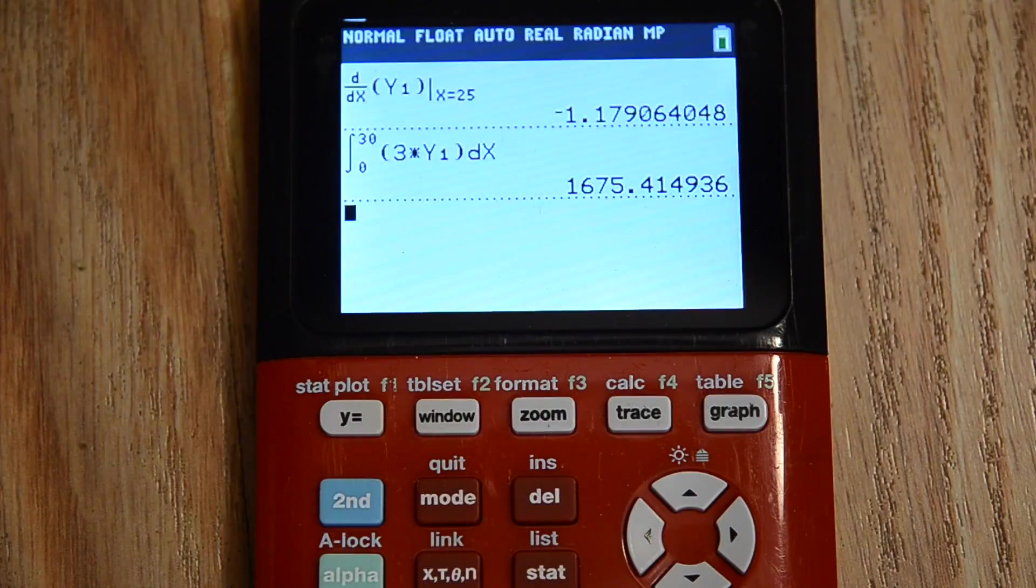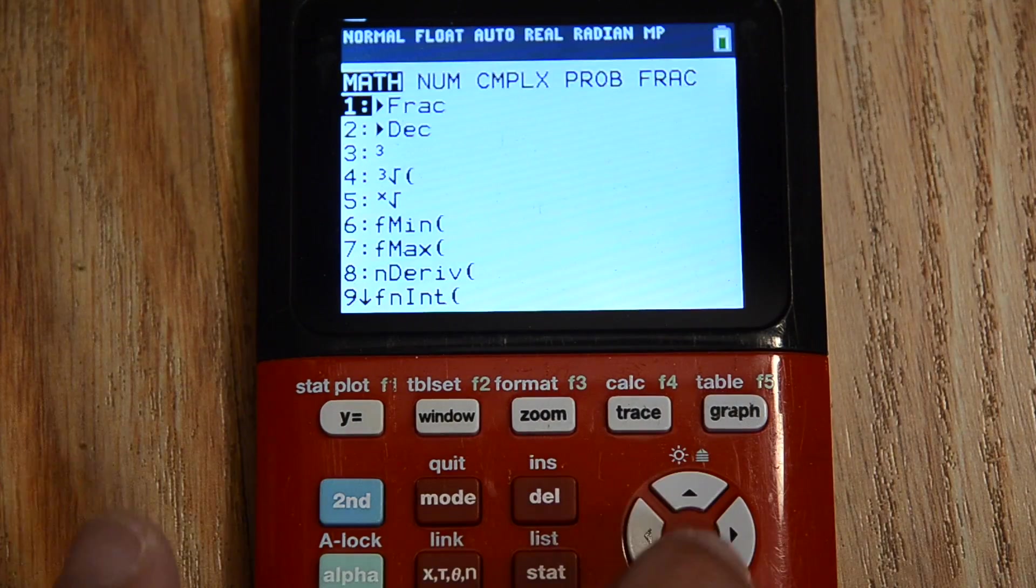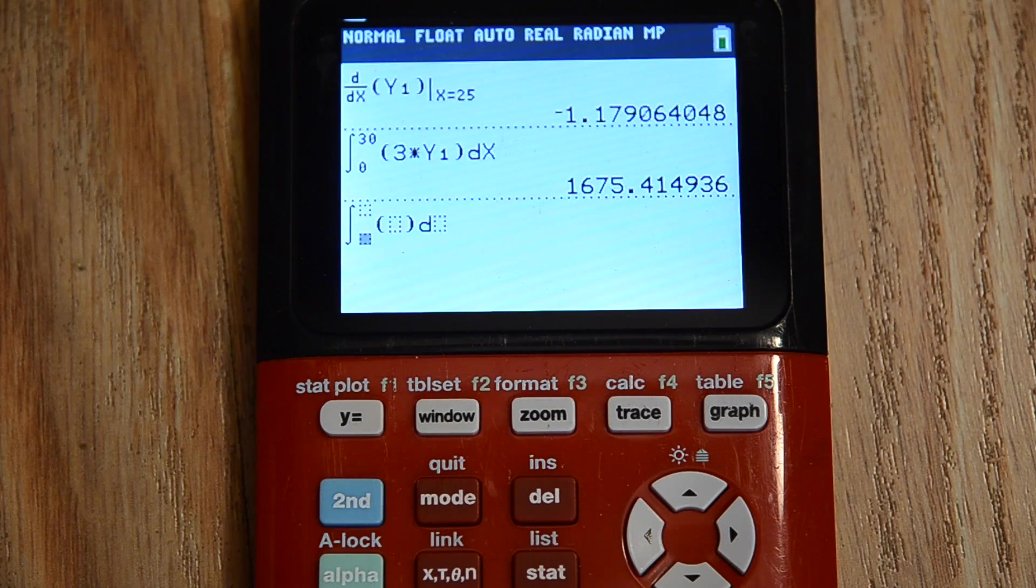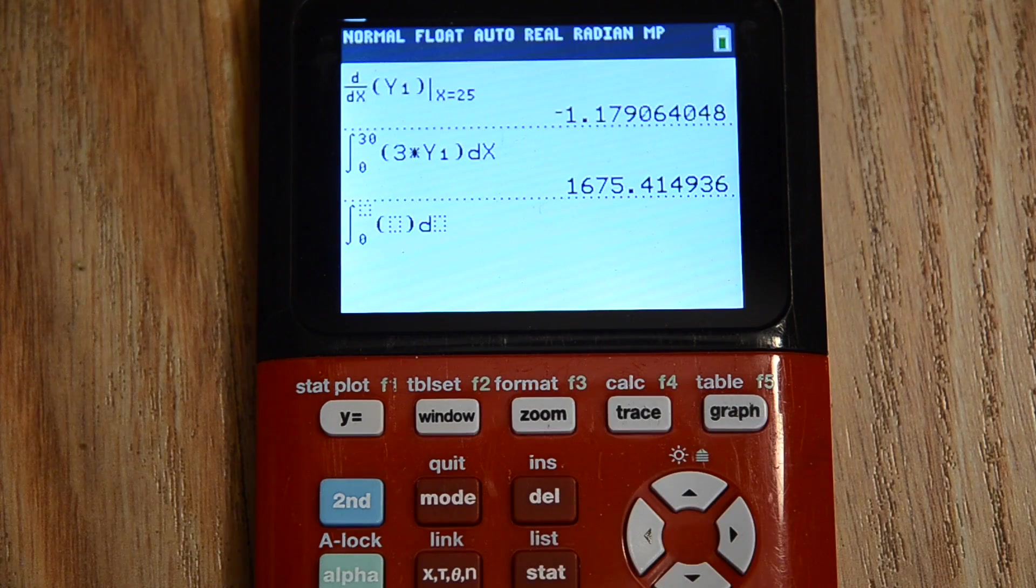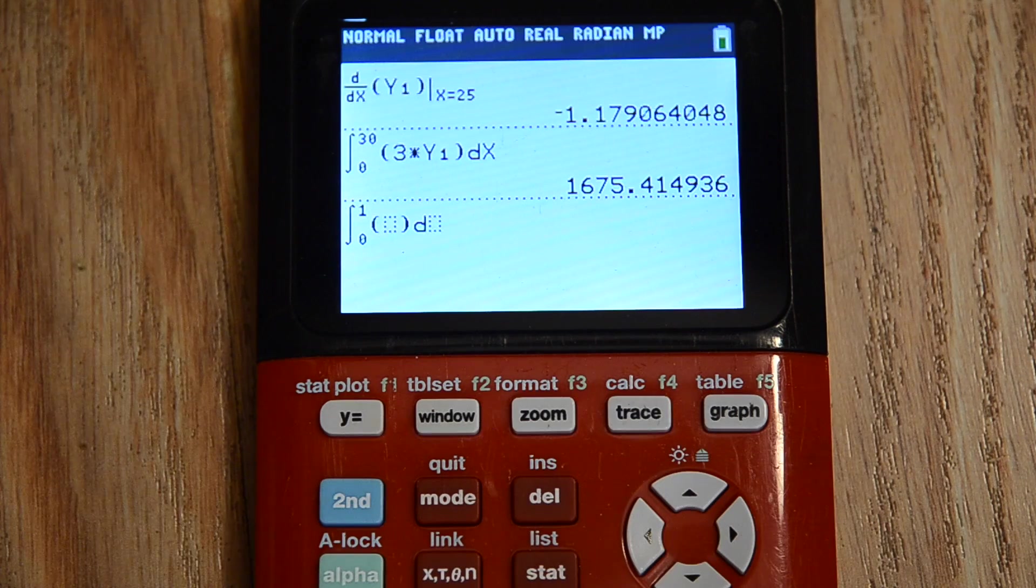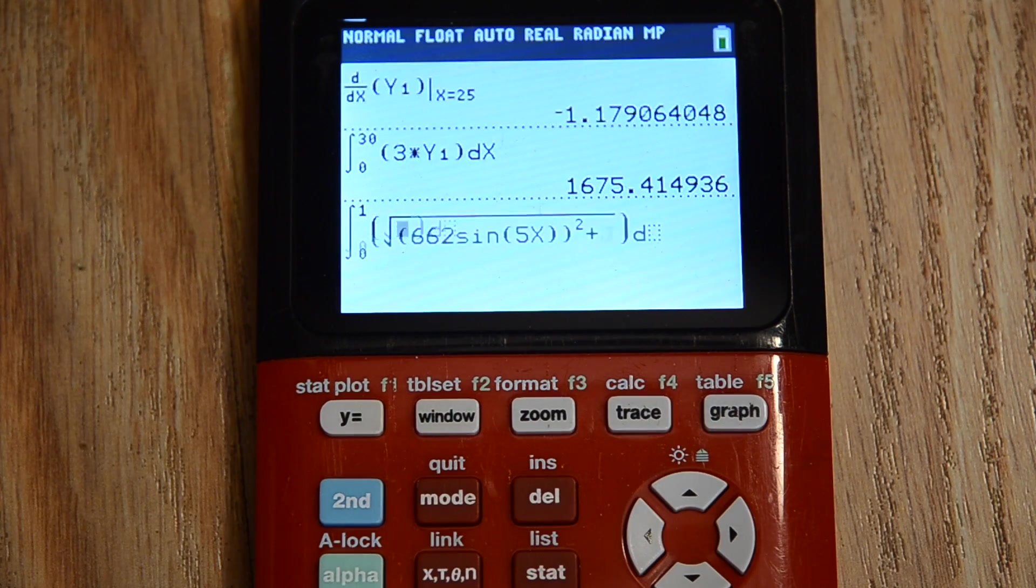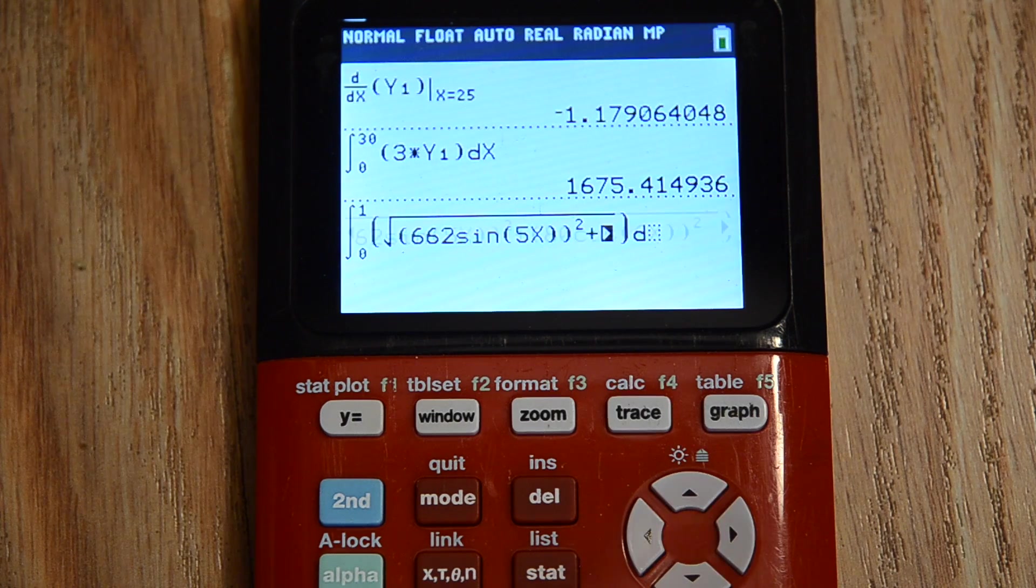For Part D, we have another numerical integration. So, math, numerical integral. This time it is going to be from 0 to 1. These functions are not stored. So, second square root, first function plus the second function squared, or derivative.